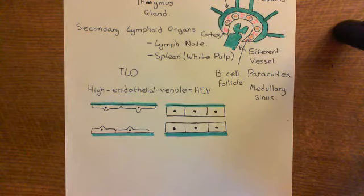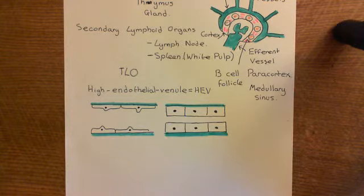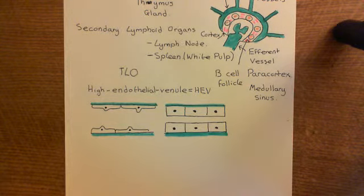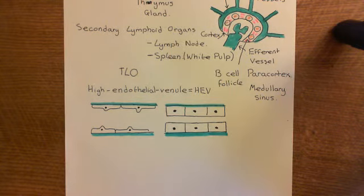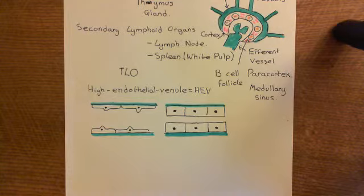Welcome to this next video in which we are discussing tertiary lymphoid organogenesis. We've discussed that tertiary lymphoid organogenesis is the process whereby you build up masses of naive T cells and naive B cells at a site where you have had a chronic inflammatory response.